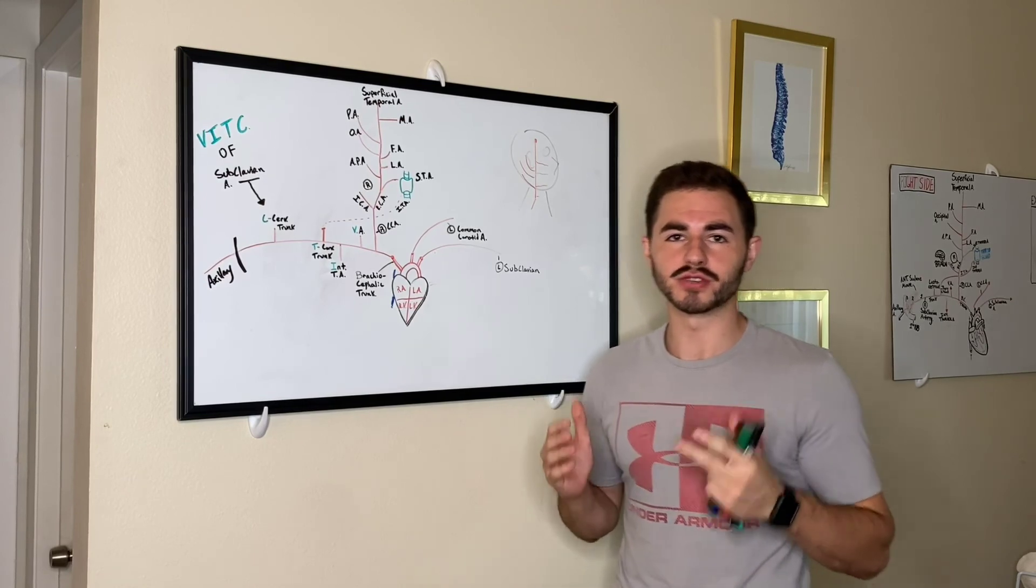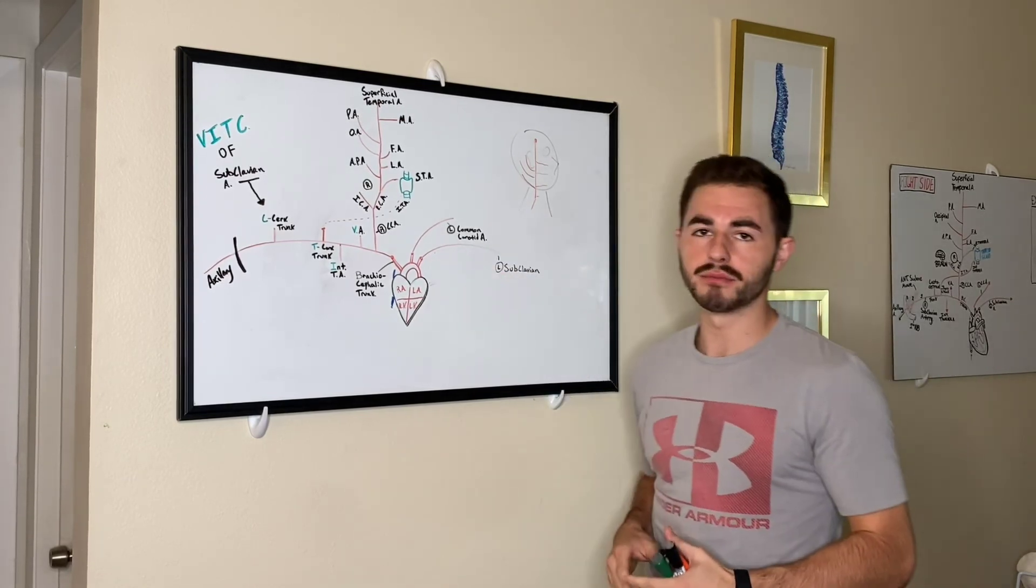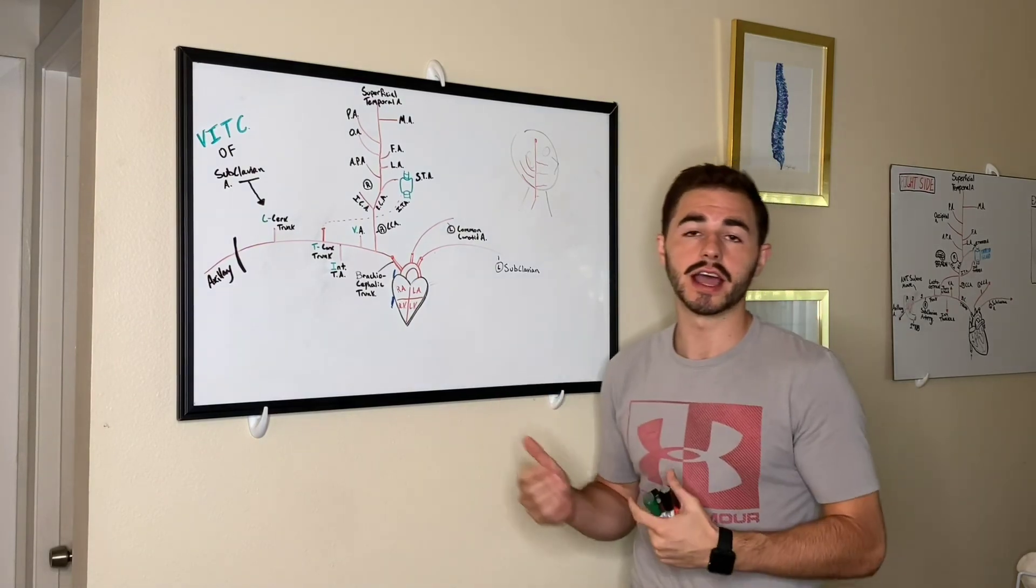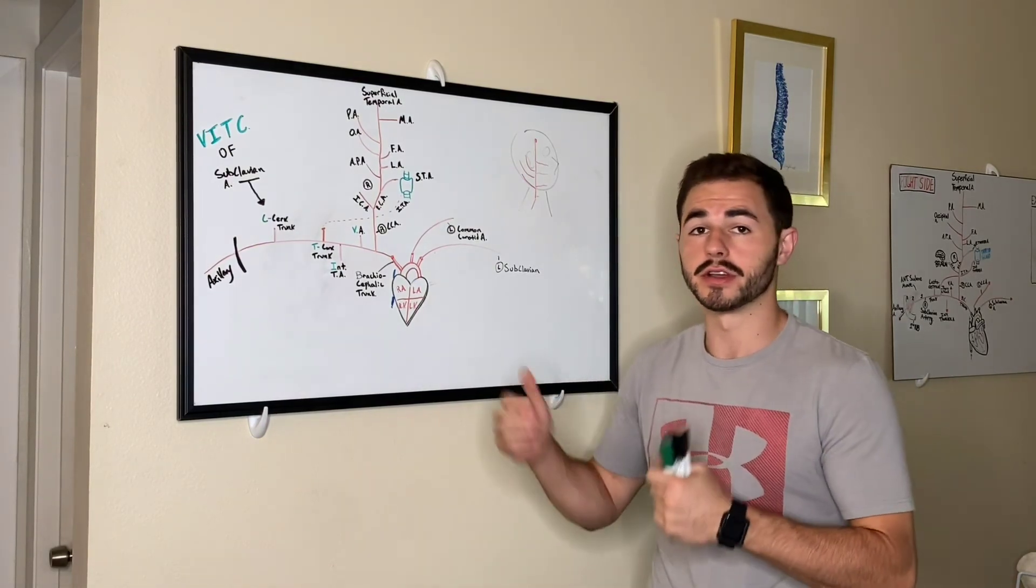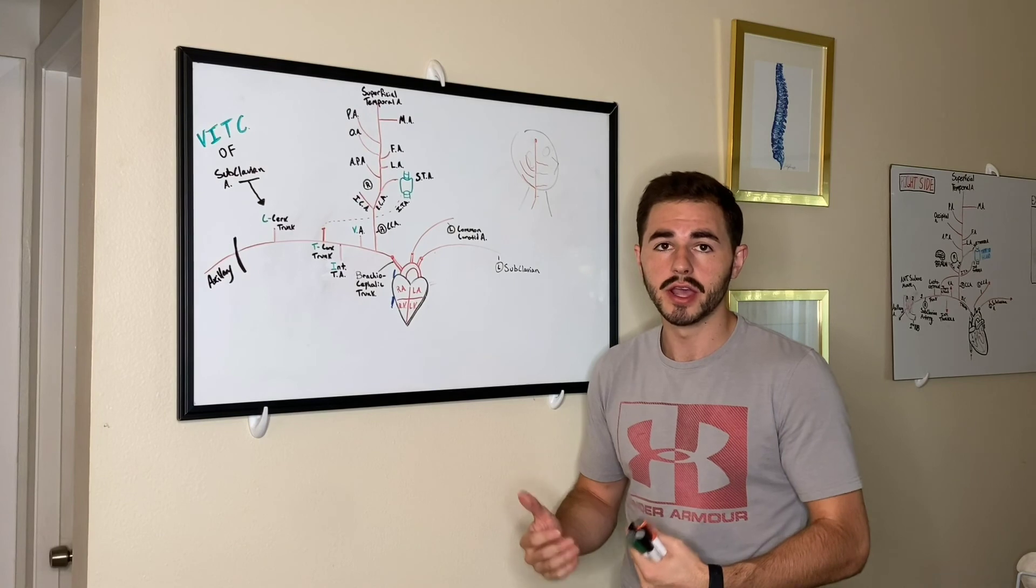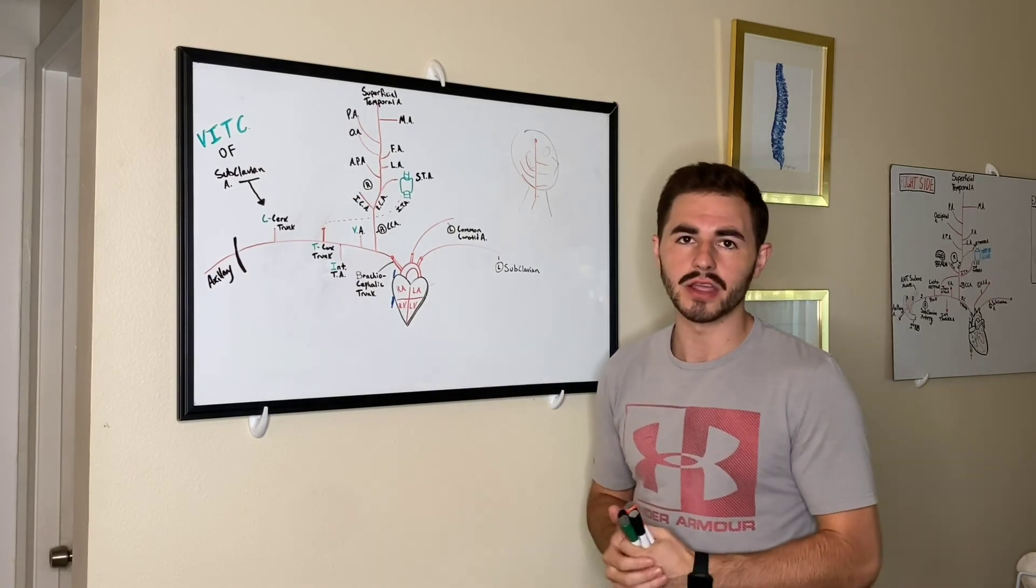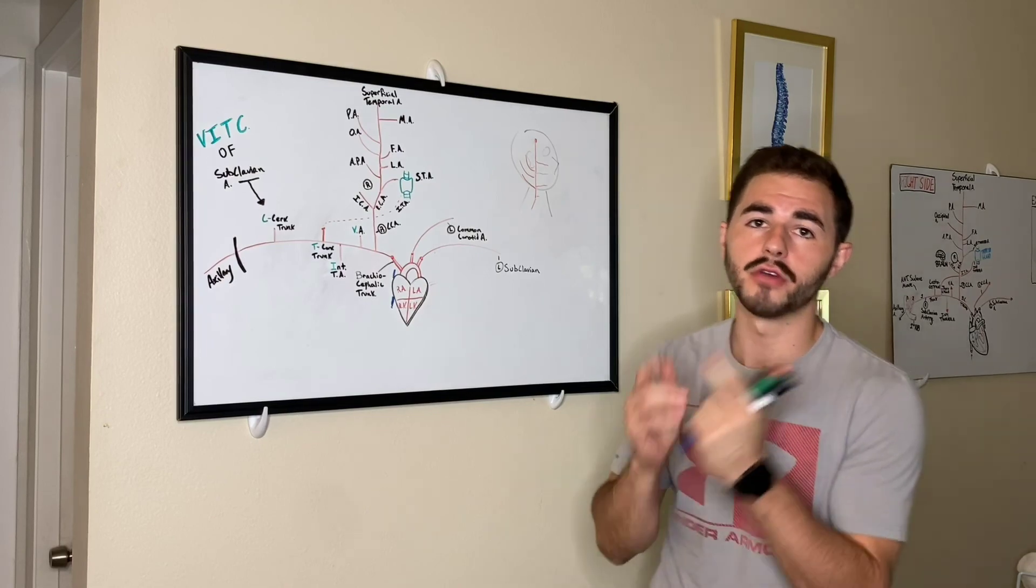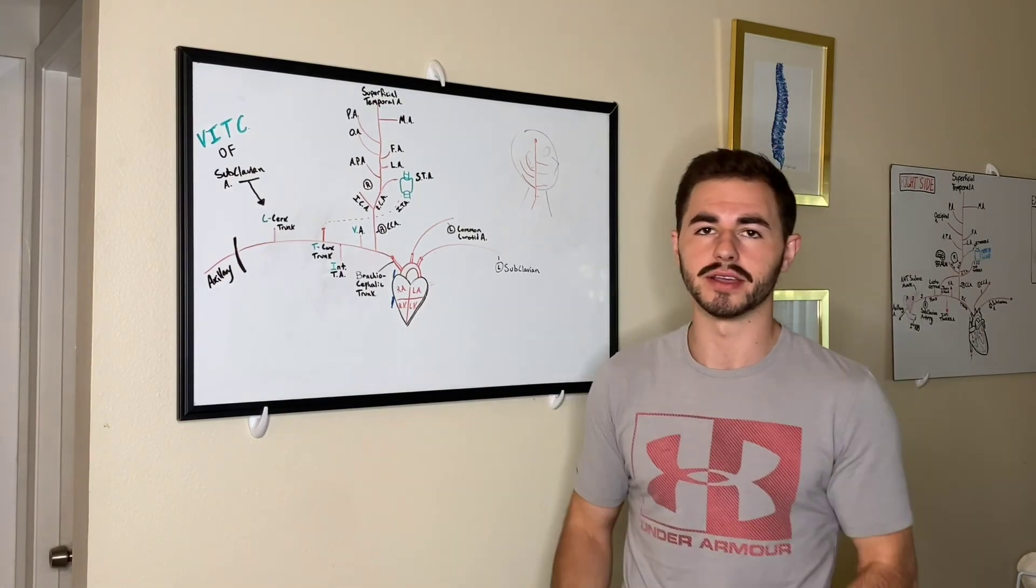So guys, that pretty much wraps this up for the three main branches coming off the aortic arch. And I want you guys to be on the lookout in the next week or so for the cardiovascular system continued as we do the descending aorta and the three main branches coming off of that. So guys, remember health sucks. Let's talk about it. Later.